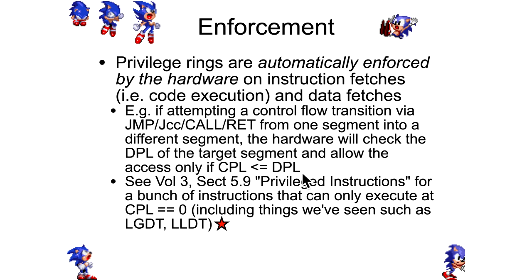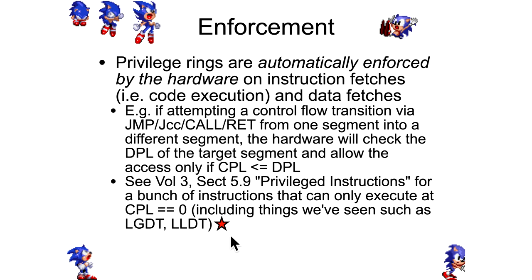Another place where the hardware enforces privilege is privileged instructions. You can see this in the manual where there's a big list of privileged instructions, but we've already seen some examples. Things like loading the GDT register and loading the LDT register are indicated with a red star — those can only be done from CPL 0, and that's just hard-coded into the way the processor executes.